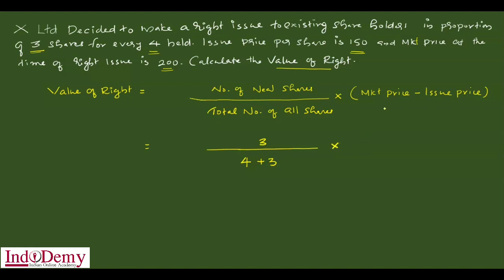Multiply by market price which was 200, minus issue price. Issue price per share was 150, so 200 minus 150.